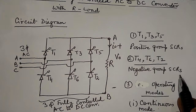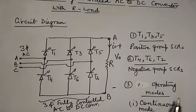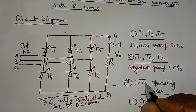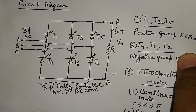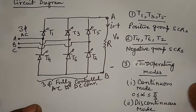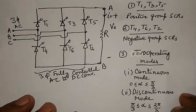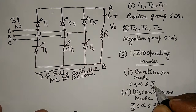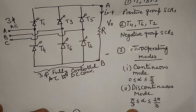In case of resistive load, this three-phase fully controlled AC to DC converter generally operates in two modes. The first is the continuous operating mode, where the firing angle varies from 0 to 60 degrees (π/3). The second is the discontinuous mode, where the firing angle alpha varies from π/3 to 2π/3.